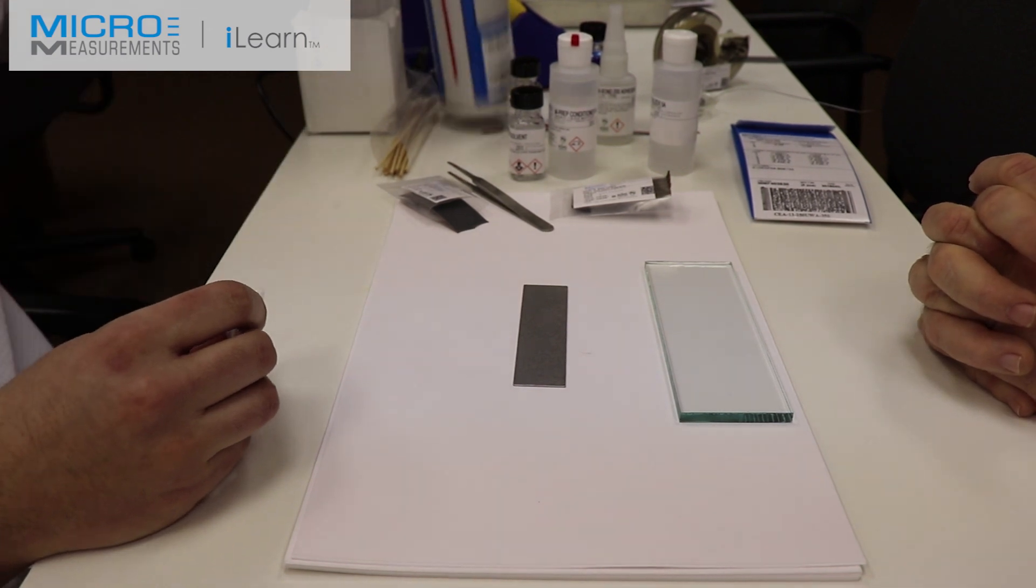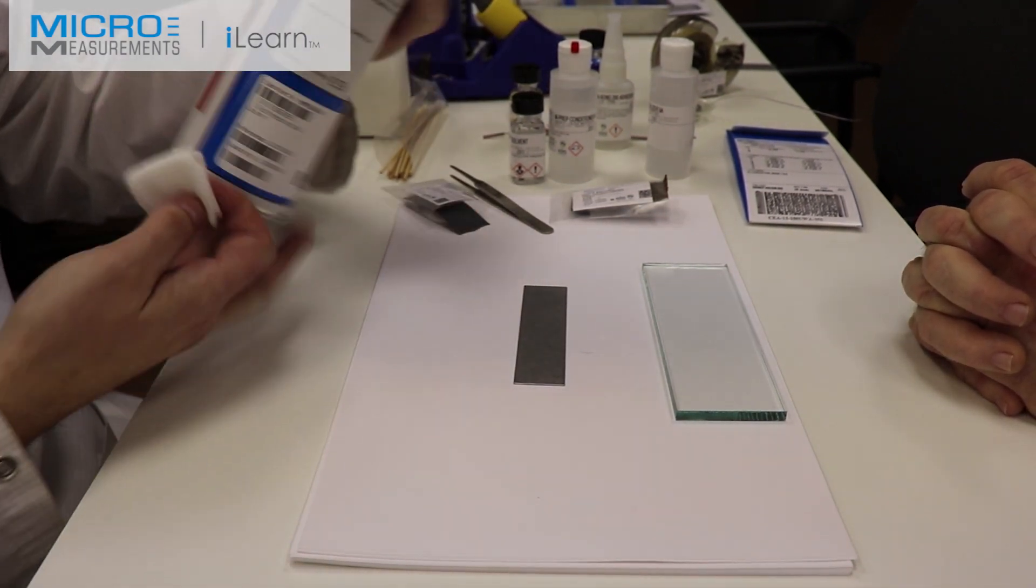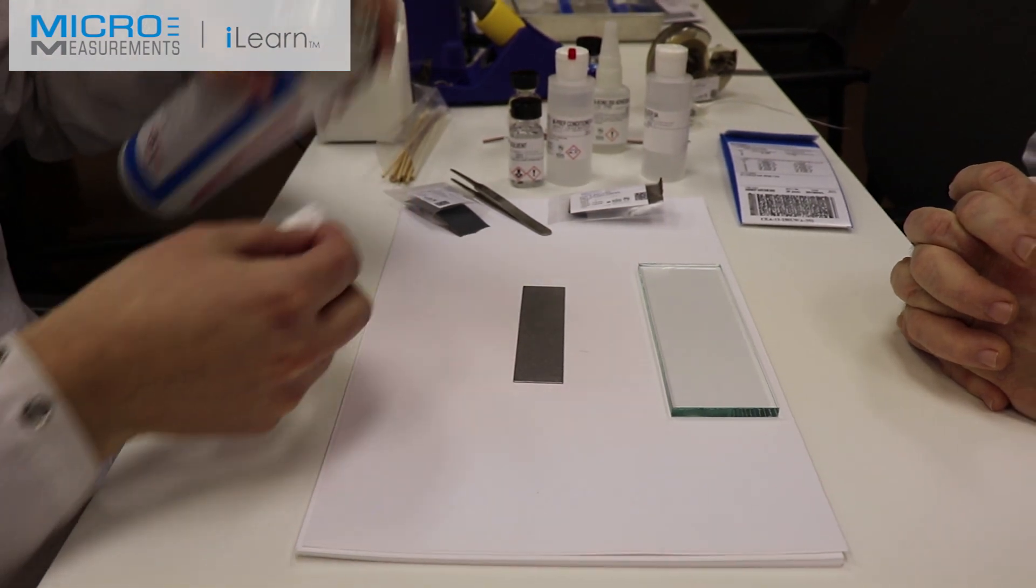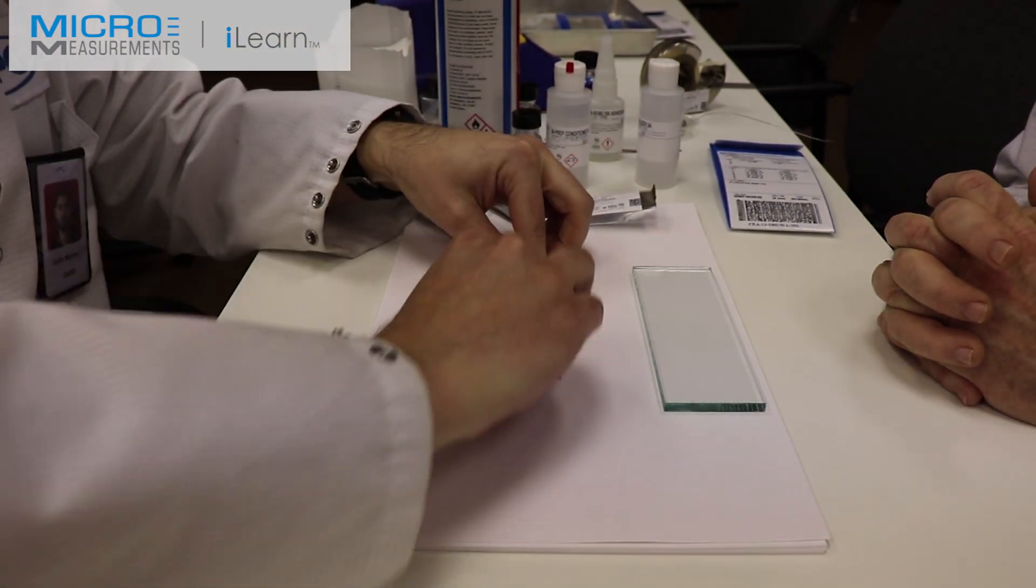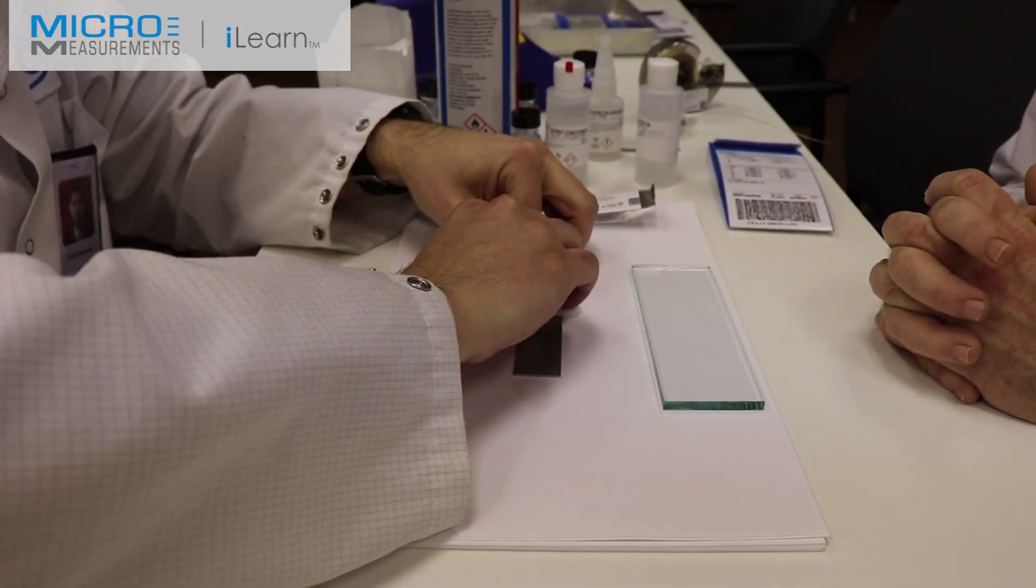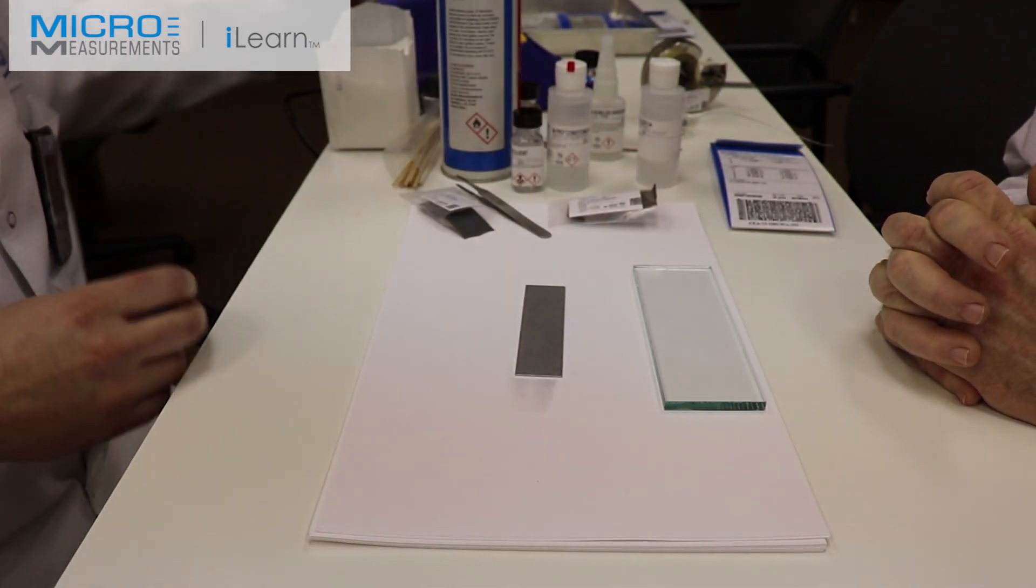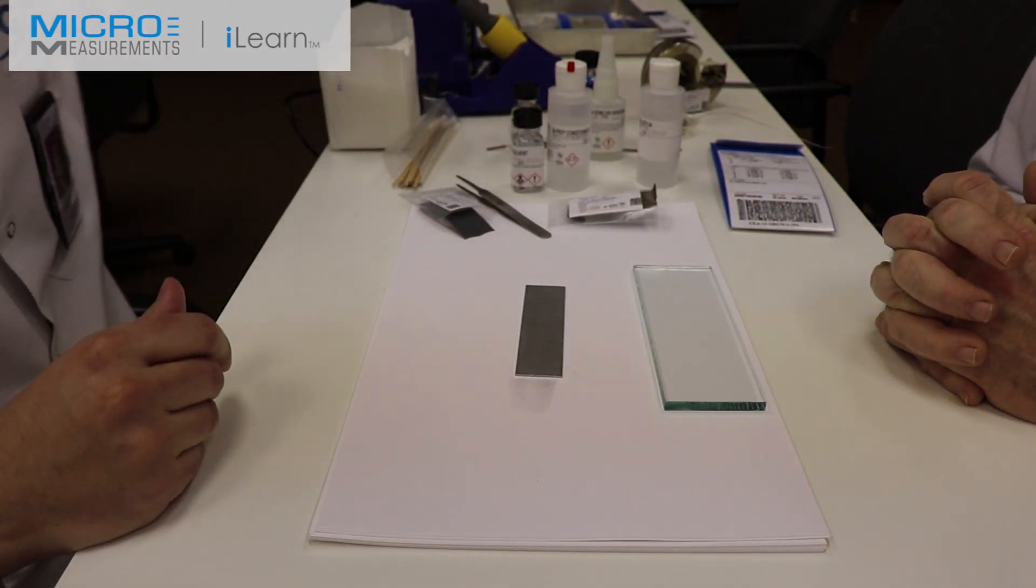First thing we've got to do is degrease it. CSM-3. We're going to take a dry gauze sponge, saturate it with CSM-3 and degrease the surface of our part. That way we don't grind any machine oils or anything like that into the surface.